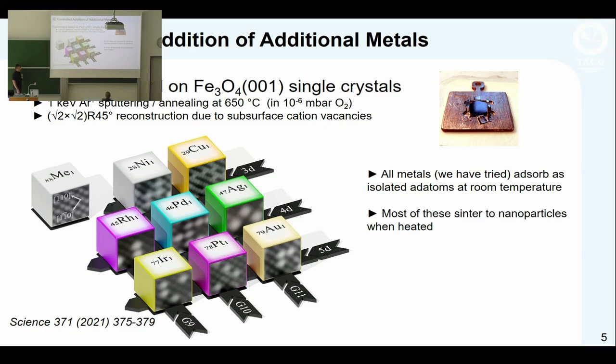One nice thing we've been doing is modifying this surface with different cations. When we deposit metals of various types, they all adsorb as single atoms in the exact same place. In the TACO project, we're more interested in 3D transition metals like copper and nickel. These behave differently - while other metals sinter into nanoparticles when heated, 3D transition metals behave differently.